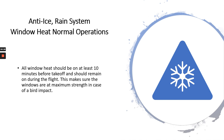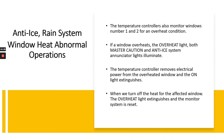Now let's talk about window heat normal operations. All window heat should be on at least 10 minutes before takeoff and should remain on during the flight — this ensures the windows are at maximum strength in case of a bird impact. For abnormal operations, the temperature controllers also monitor windows number one and two for an overheat condition. These controllers were covered in the previous video, part two.